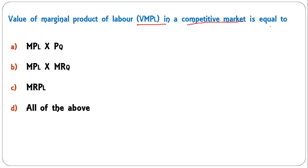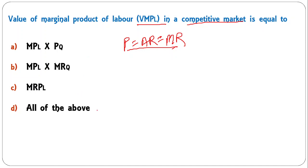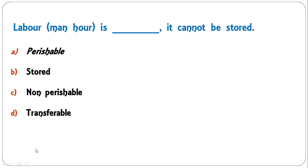The value of marginal product of labor (VMPL) in a competitive market equals MPL multiplied by price, MPL multiplied by marginal revenue, or MRPL — or all of the above? In a competitive market, price equals average revenue equals marginal revenue, so all three expressions give the same answer. All of the above is correct.